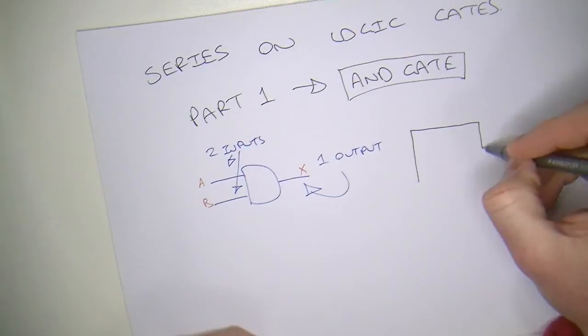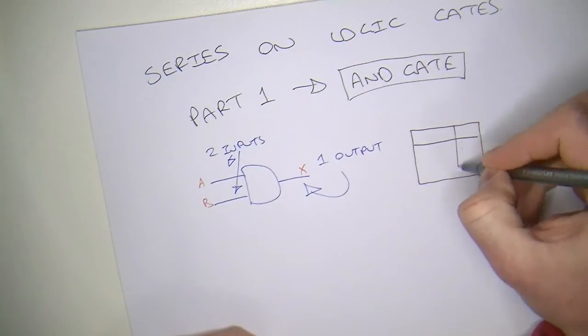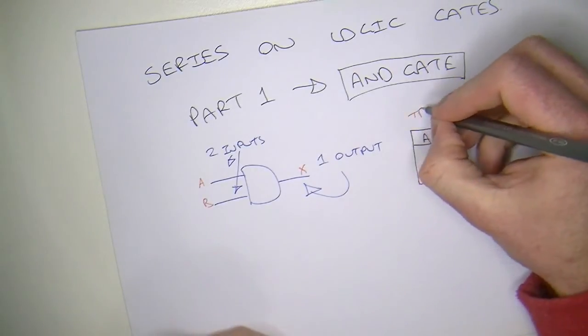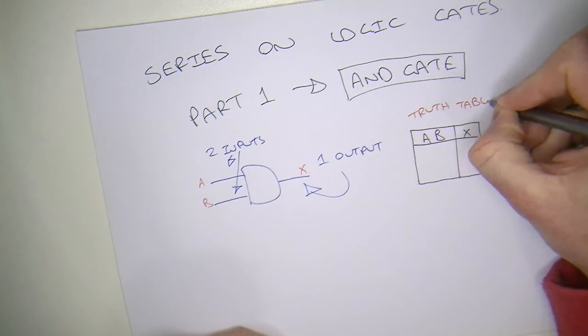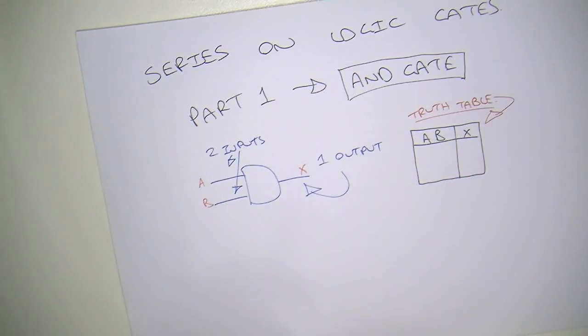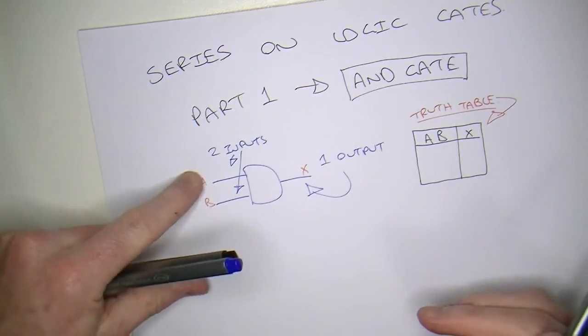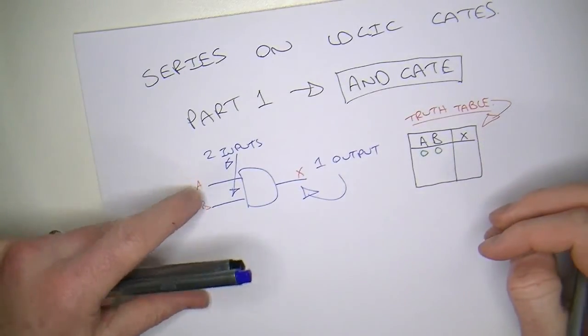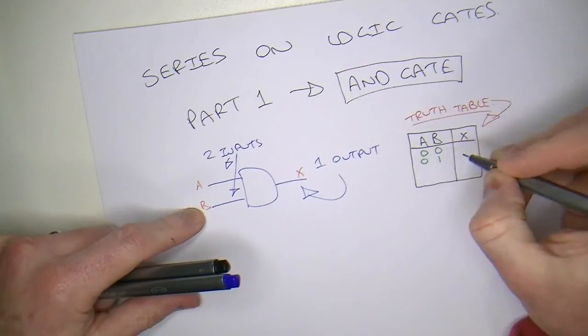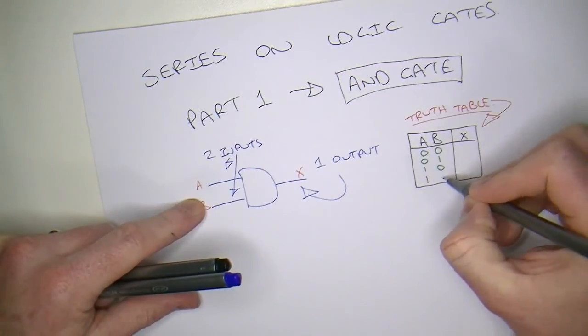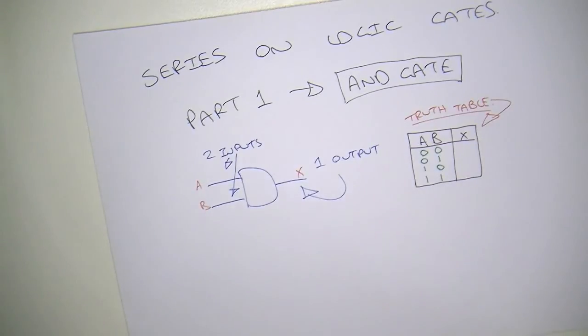So, what we can do here is draw up what's known as a truth table. And with this, you can write up every combination of 1s and 0s that you could have on the two inputs. So, we could have 0, 0. So, input A is a 0 and B is a 0. Or we could have 0, 1. Or we could have 1, 0. Or 1, 1. So, 4 combinations for two inputs.